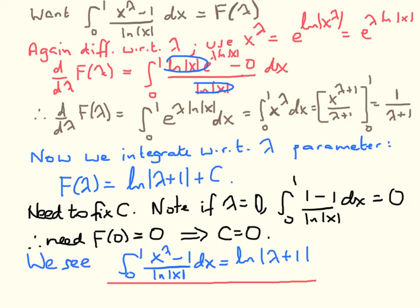We need to find the constant by going back to the starting line. If λ equals 0, we have x^0 = 1, and 1 minus 1 vanishes, so the integral of 0 vanishes. Thus f(0) = 0. Substituting λ = 0 into our result, we have log(0+1) + c = log(1) + c = 0 + c. Setting this to 0 tells us the integration constant must also vanish.